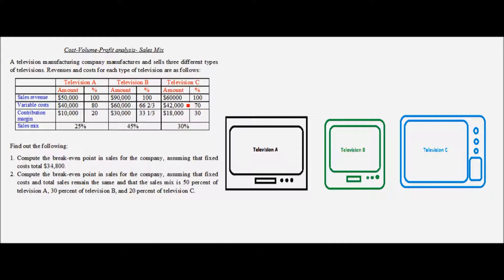For television C, the sales revenue is $60,000 which is 100%. Variable cost is $42,000 which is 70%, and the contribution margin is $18,000 which is 30%. So $60,000 minus $42,000 is $18,000, and 100% minus 70% is 30%.